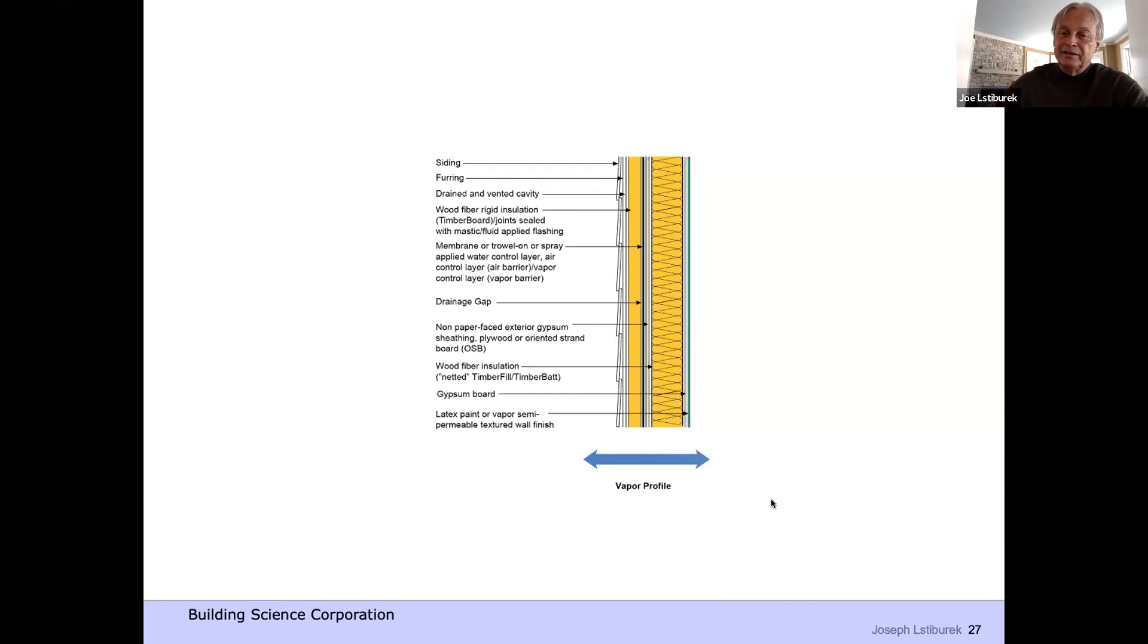Now a really good vapor throttle is plywood or OSB. You have plywood or OSB sheathing on the outside, you put whatever water control layer you want on it - you've got your vapor throttle. Done! Woohoo!